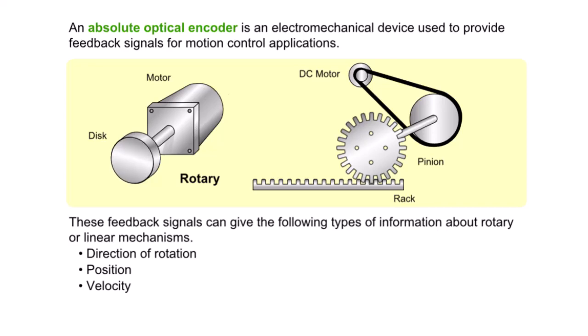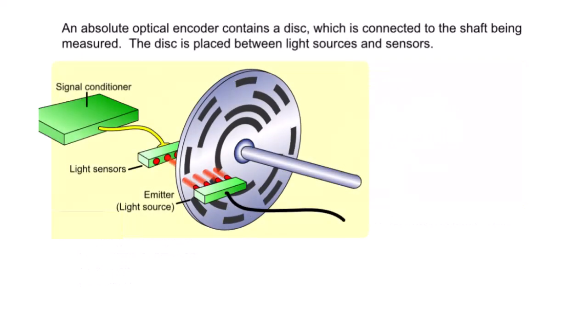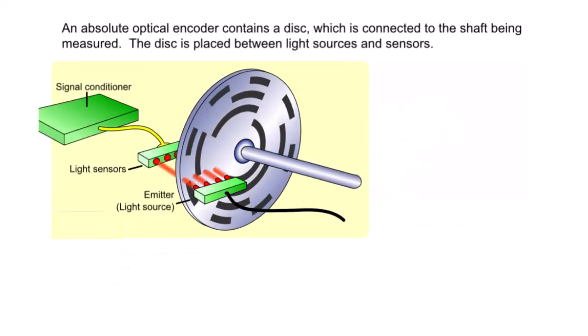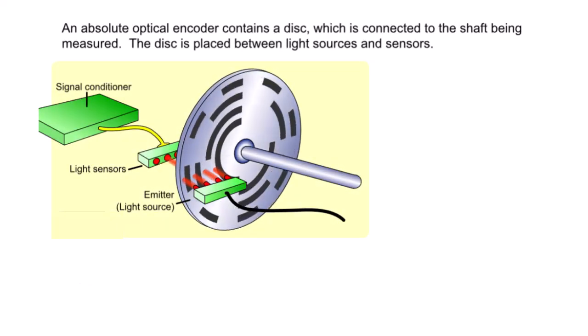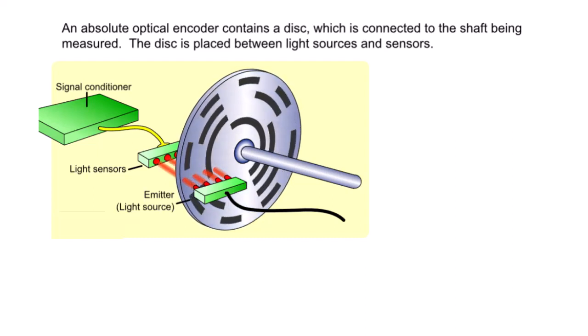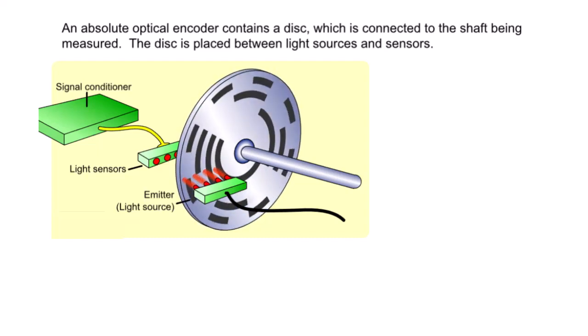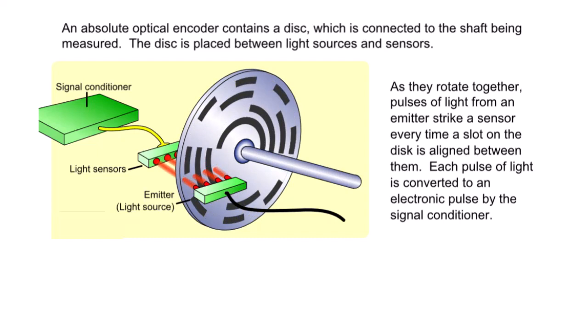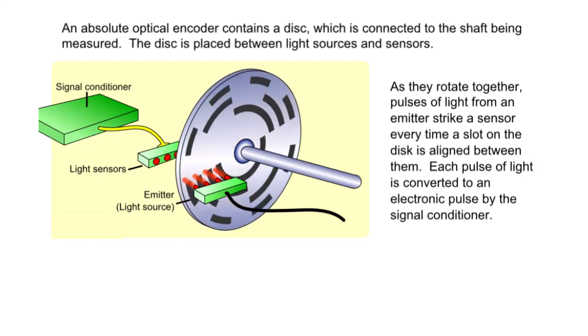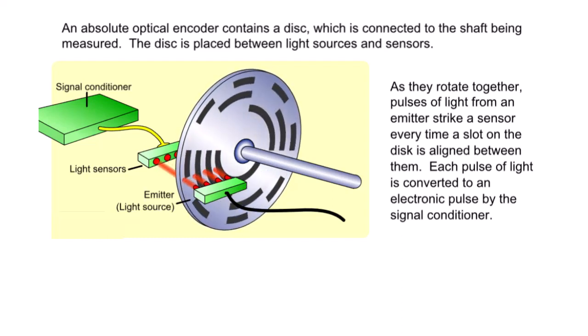An absolute optical encoder contains a disc which is connected to the shaft being measured. The disc is placed between light sources and sensors. As they rotate together, pulses of light from an emitter strike a sensor every time a slot on the disc is aligned between them.